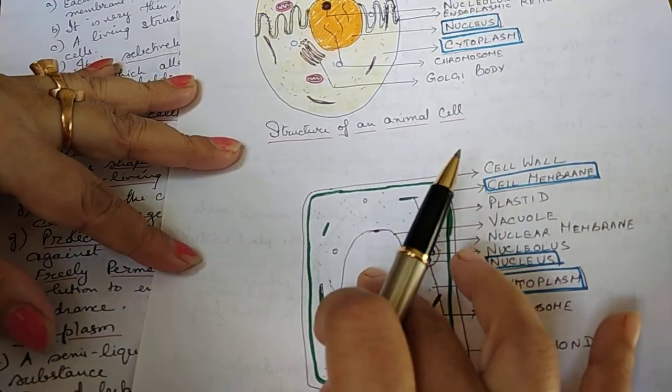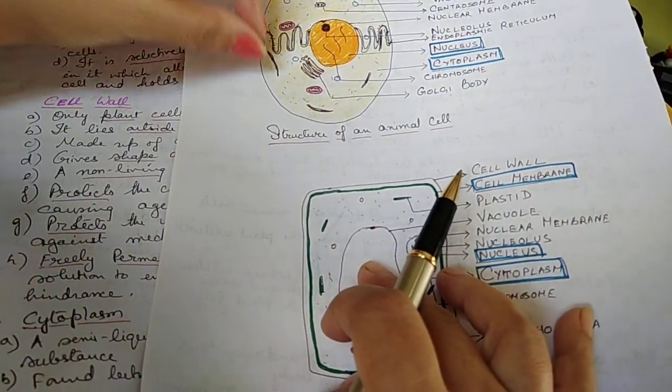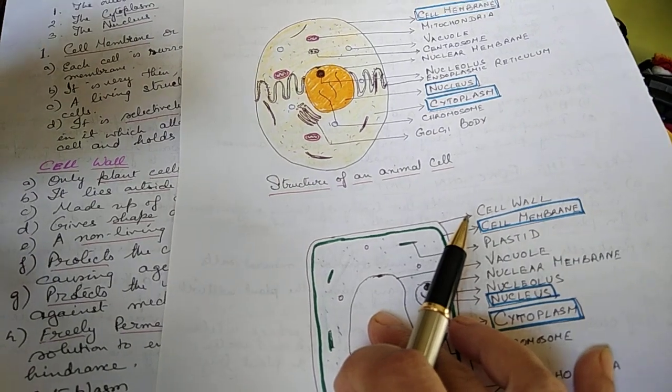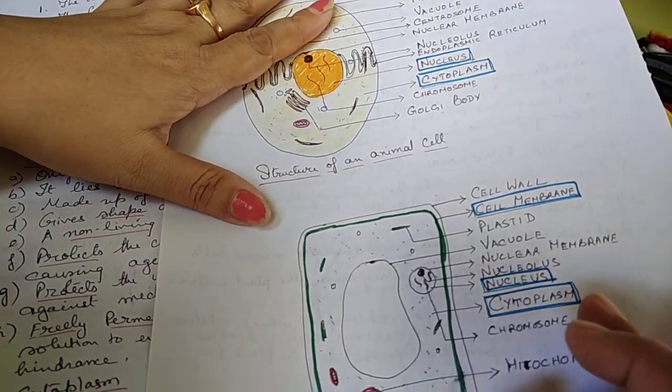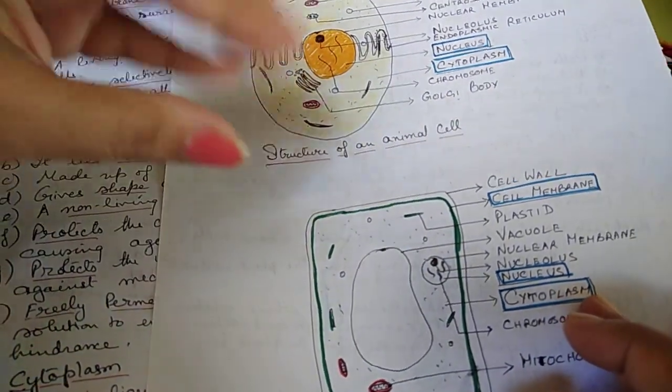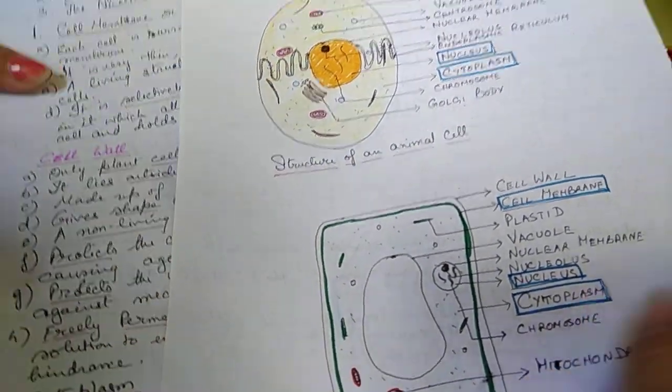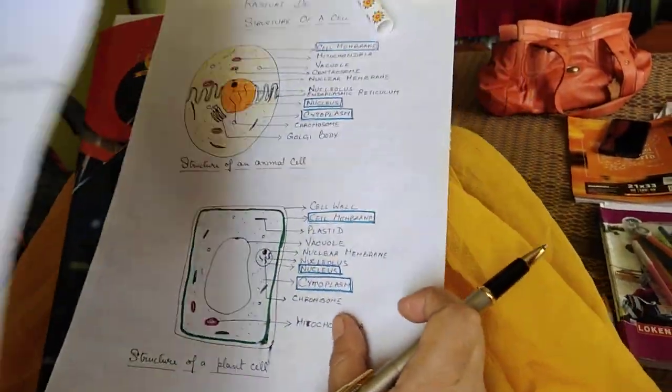Another main difference is the vacuole. Large vacuoles are present in the plant cell, but in the animal cell very small or no vacuoles are present. And the other things are almost same. Now we come to cell membrane.